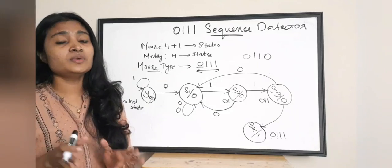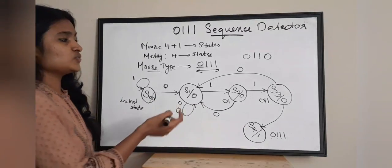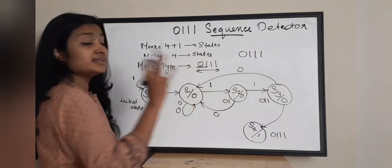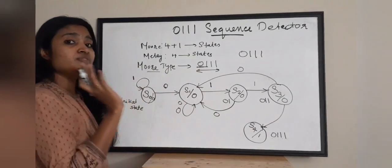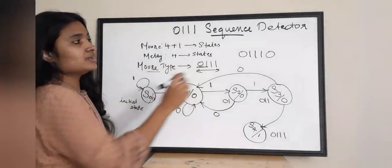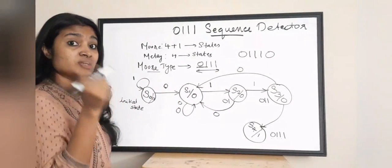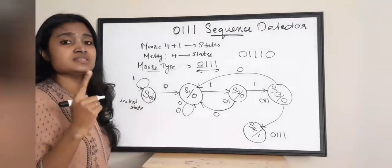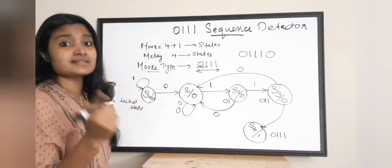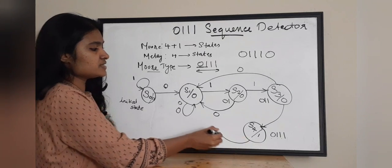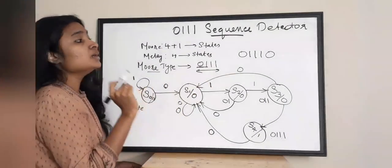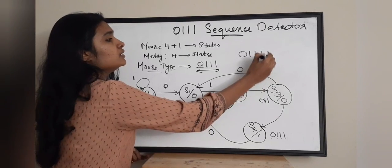Now we complete S4 state's cases. In S4 state the sequence we have is 0 1 1 1 — we have detected it once. Now if a 0 is received, since your sequence has only one 0 as the initial bit, whenever you receive a 0 you jump back to the state where the first 0 is received. So in S4, receiving a 0 means you jump back to S1 state.